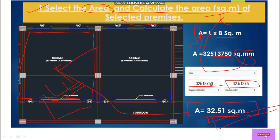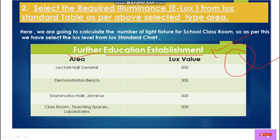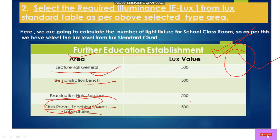We have calculated the area of this classroom in square meters. Now in the second step, we determine how much lux level is required for a classroom. We have standard tables for education buildings and schools. For a lecture hall and teaching spaces, the required lux level is 500. So we select lux level equal to 500.